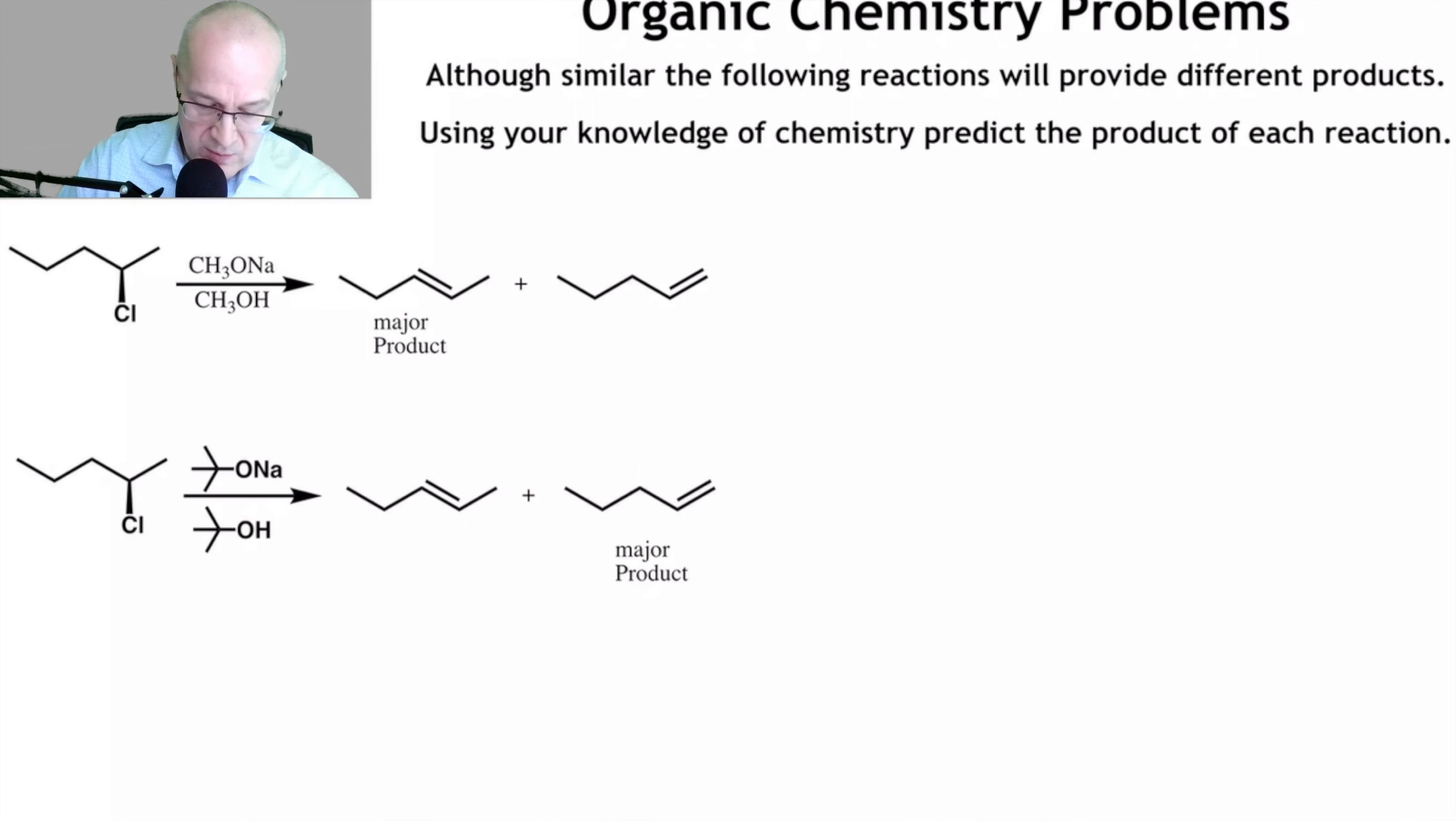We're going to explain the major product here and the major product here, and it's going to help us explain both. Let's number the carbons: one, two, three, four, five. So let's set up. There we go. One, two, three, four, and five. And there's the hydrogen there. So that's going to give us the major product here.